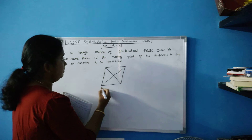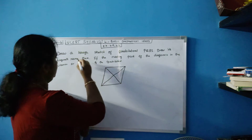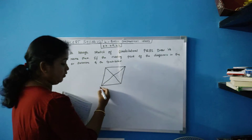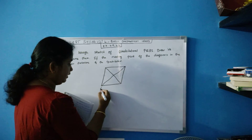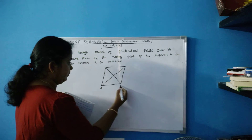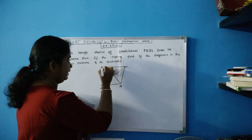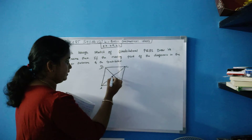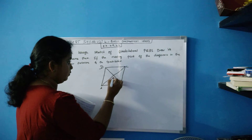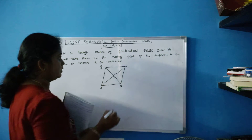Let us name them — they also asked you to name it. So I am naming A, B, C, D and the center point as O, which is the meeting point of the diagonals.